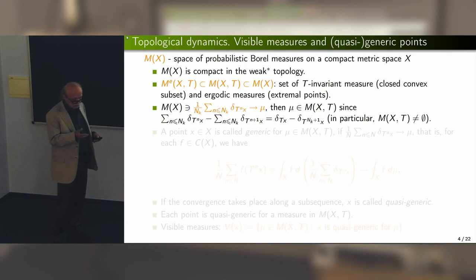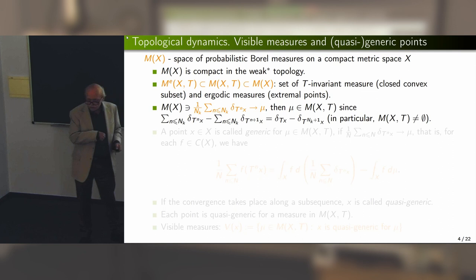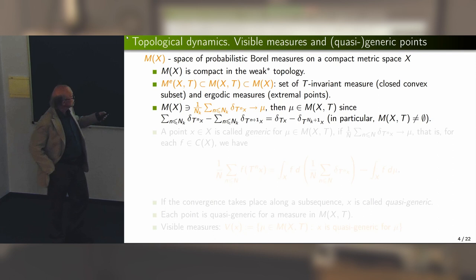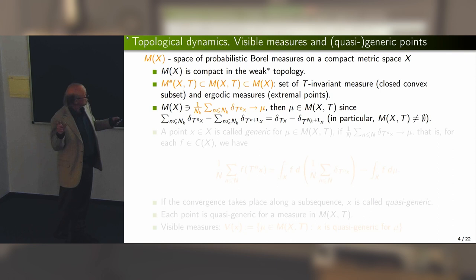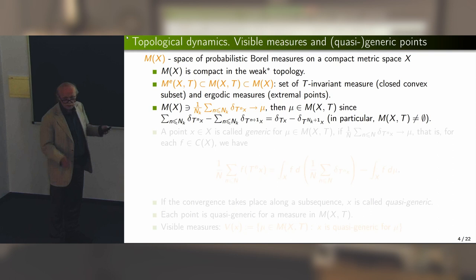Vitaly mentioned yesterday that this set being non-empty is the Krylov-Bogoliubov theorem. We prove this because it's an easy observation. To show the set is non-empty: take a point x, look at its orbit, and consider purely atomic empirical measures which assign mass 1/N to each of the first N orbit points. This empirical measure is generally not T-invariant unless the point is periodic, but the limit measure is clearly T-invariant, because when you take the difference and divide by 1/N, it contributes zero in the limit.